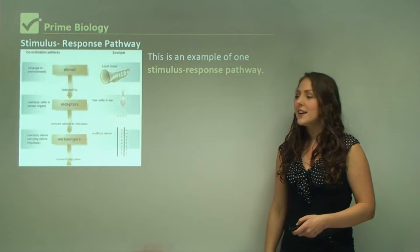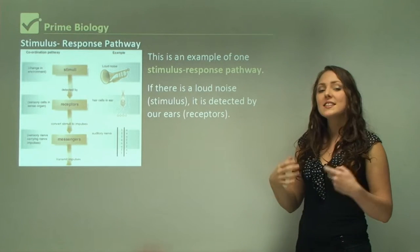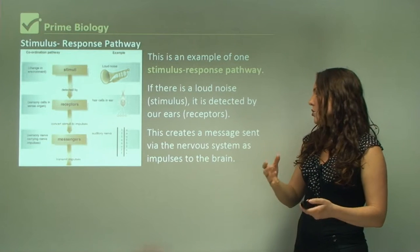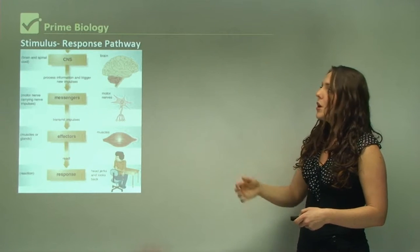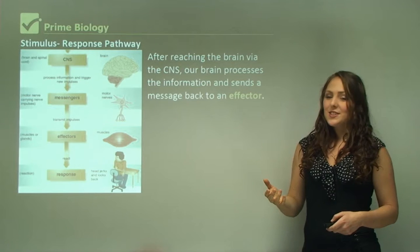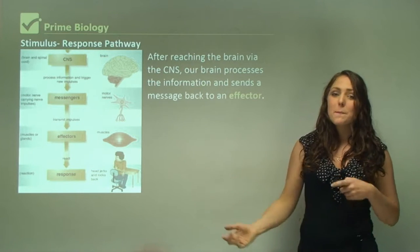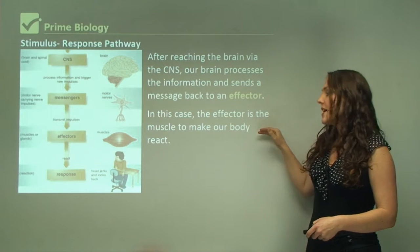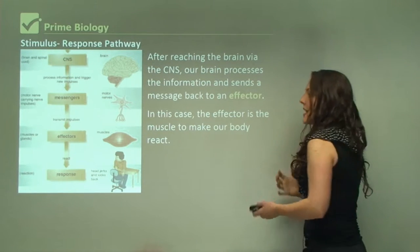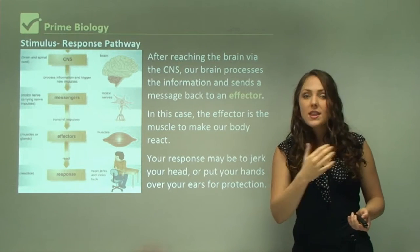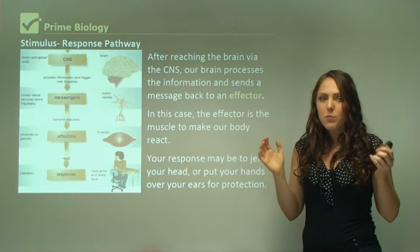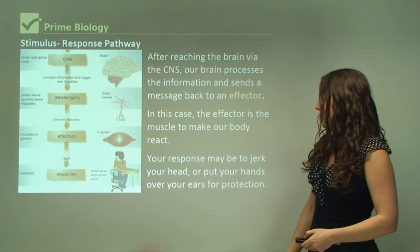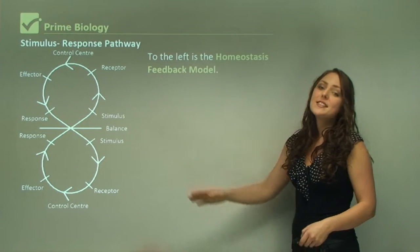An example stimulus-response pathway: your stimulus is a loud noise, detected by our ears — the receptors. This creates a message sent via the nervous system as impulses to the brain. The brain processes the information and sends a message to an effector — in this case, muscles — to make the body react. If you hear a loud sound behind you, the response might be to jerk back and look, or to put your hands over your ears.